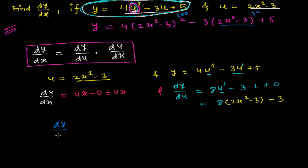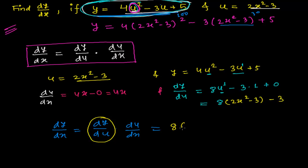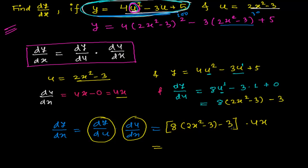Now let's combine using the chain rule. dy/dx equals dy/du times du/dx. We found dy/du is 8(2x squared minus 3) minus 3, and du/dx is 4x. So dy/dx equals [8(2x squared minus 3) minus 3] times 4x.